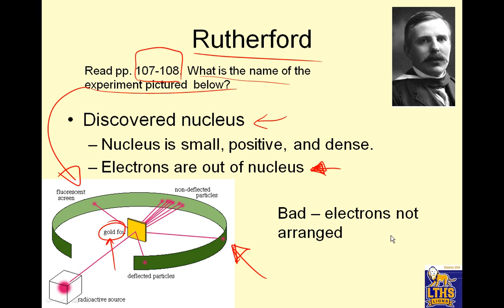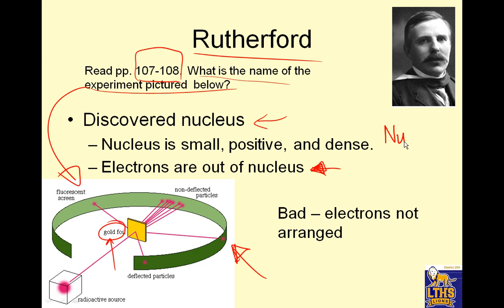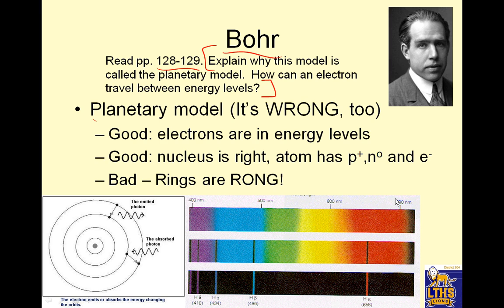The bad thing about Rutherford's model was that none of the experimental evidence could help decide where the electrons were. Because of Rutherford's evidence, we were able to create what we call the nuclear model of the atom — the model is the picture we can draw based on evidence. Now the atom has a nucleus, and outside the nucleus were the electrons. We call it the nuclear model because it was the first model of the atom to contain that positively charged nucleus.